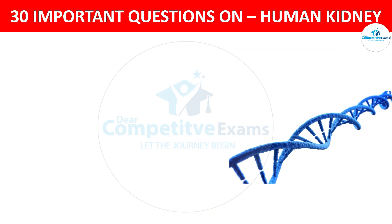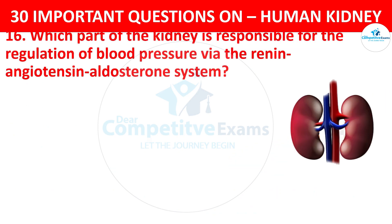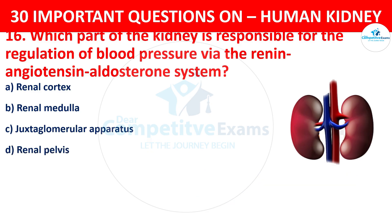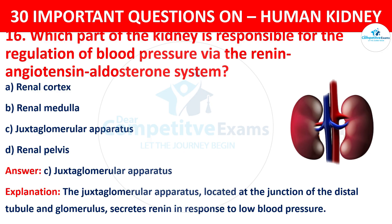Question 16. Which part of the kidney is responsible for the regulation of blood pressure via the Renin-Angiotensin-Aldosterone System? The options are: Renal Cortex, Renal Medulla, Juxtaglomerular Apparatus, or Renal Pelvis. The correct answer is C, i.e. Juxtaglomerular Apparatus. The juxtaglomerular apparatus, located at the junction of the distal tubule and glomerulus, secretes renin in response to low blood pressure.